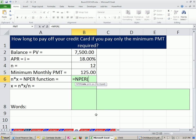NPER. It's going to need a rate. That's a period rate. So we do 18, the annual rate, divided by number of compounding periods per year.